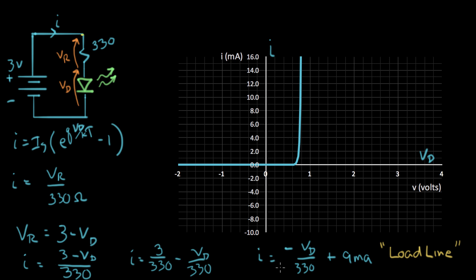Let's see if we can plot this line. Now it's a line so all we have to do is find two points that solve the line and then we'll be able to draw the line. So if I set VD equal to zero then I equals 9 milliamps. So here's VD equal to zero and it'll go through 9 milliamps. So that's one point on the line.